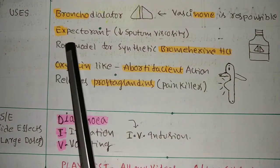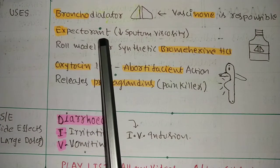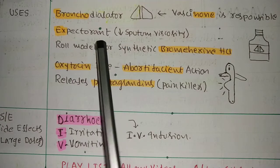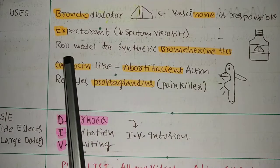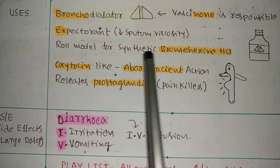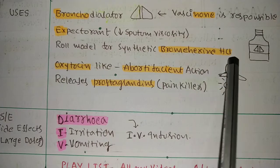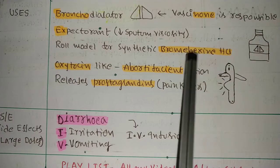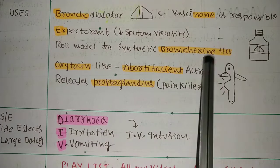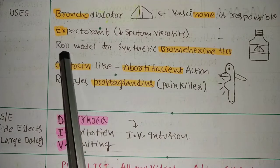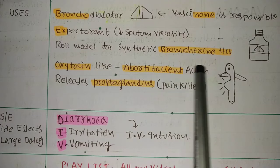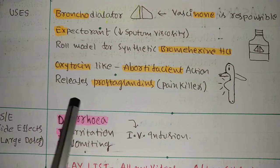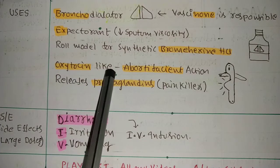And expectorant - it also acts as expectorant, which decreases the sputum viscosity. Next, this Vasaka is mainly the role model for the synthesis of synthetic bromhexine HCl. You can find this bottle in the medical shop, bromhexine HCl, which is prepared synthetically in the lab. The role model is Vasaka. In the exam they will ask: which is the role model for the synthesis of bromhexine HCl? Vasaka.